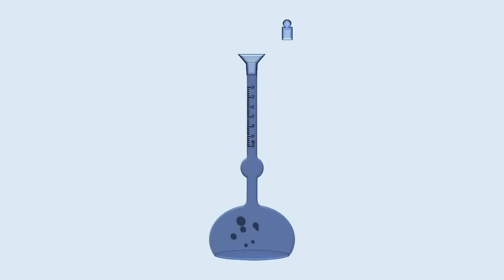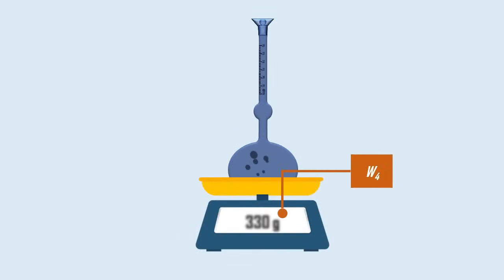The flask is then emptied and filled to the top with kerosene. The arrangement is weighed and taken as W4.